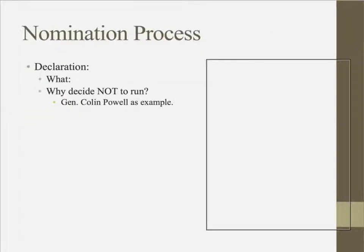The nomination process. The first step is to declare that you're running. It is a statement — it is a legal document that says, 'I officially am running for president of the United States.' You need to have a certain number of signatures on a petition, then turn in that petition and say, 'I'm officially running for president of the United States.' The problem with this, though — many people decide not to run.